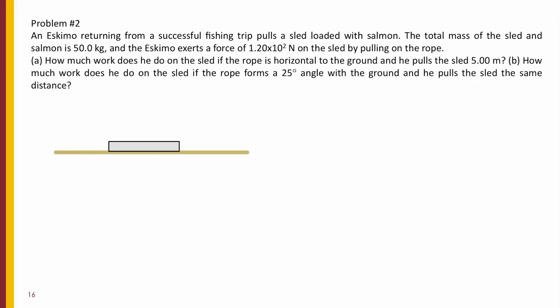And it is being pulled by a force 1.2 times 10 to the power of 2 newtons. And in letter A, the rope is horizontal. So it's pulled using a rope. Okay, and the force here is 1.2 times 10 to the power of 2 newtons. The mass of the sled and the salmon is a total of 50 kilograms.